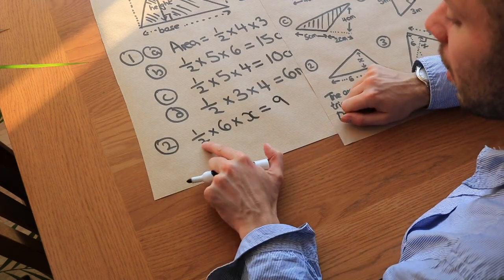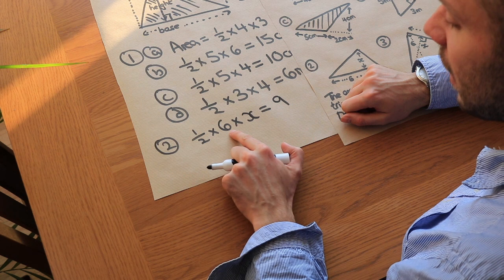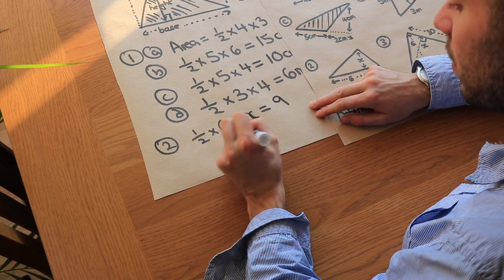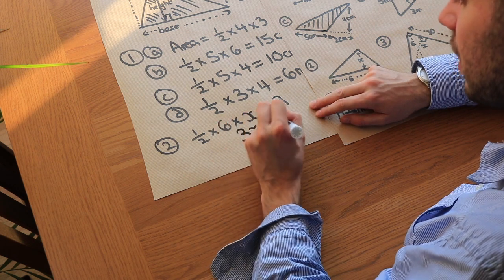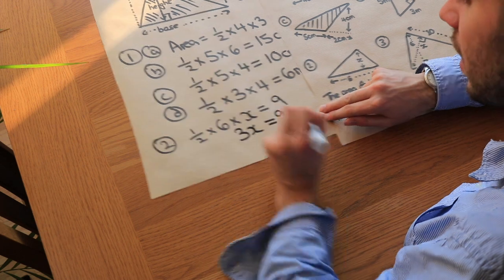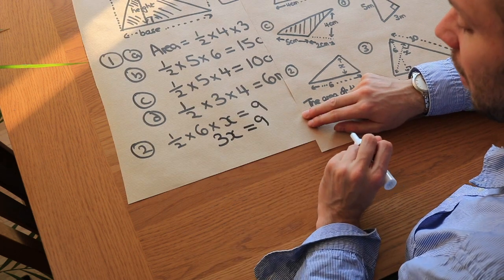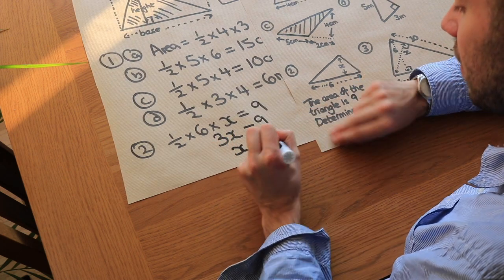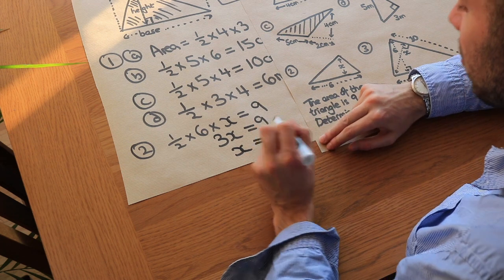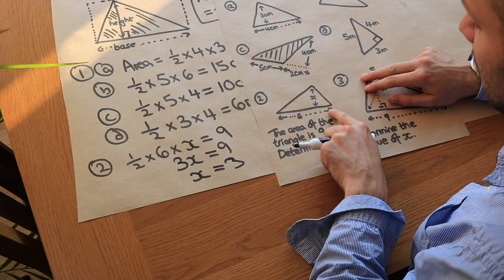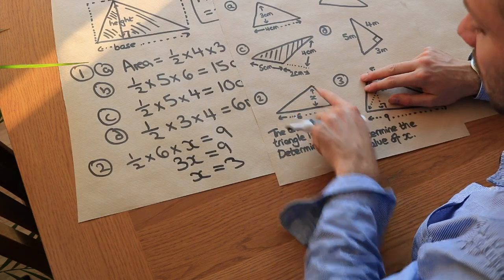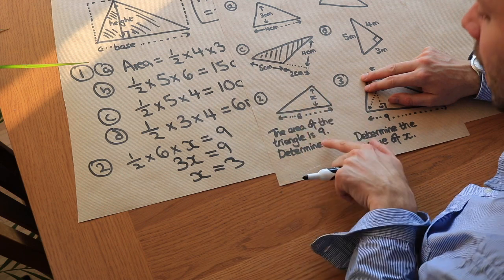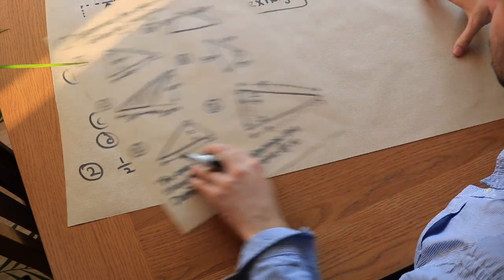Simplifying: half times 6 is 3, and 3 times x is 3x. So 3x equals 9, and dividing both sides by 3, we get x equals 3. Let's check: half times 6 times 3 — half times 6 is 3, times 3 is indeed 9. It works.